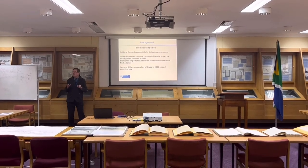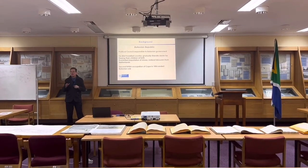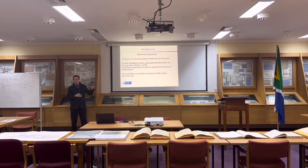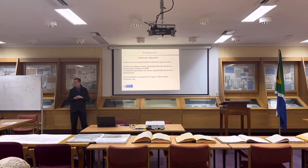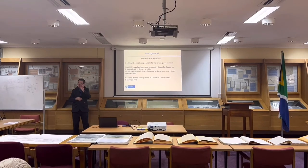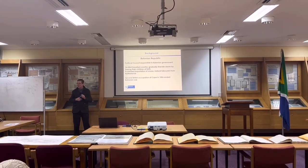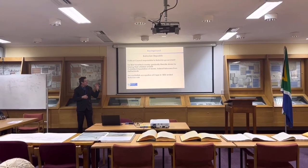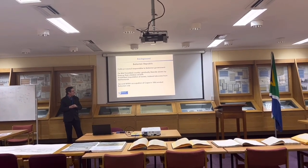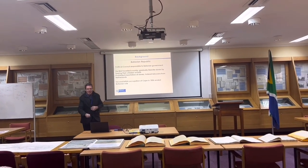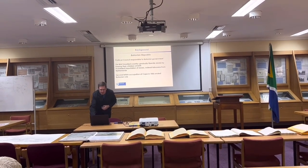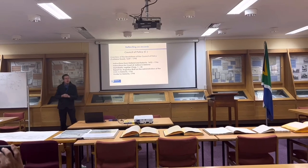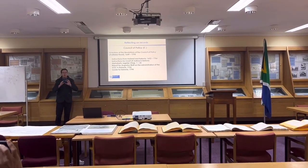In 1806, the second British occupation of the Cape took place, which formally ended the Batavian rule. The Batavian Republic's period of governance at the Cape was a very short time span — nearly five years in total.